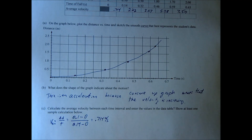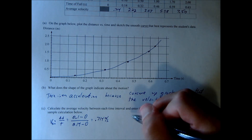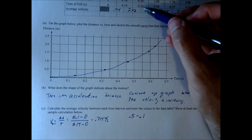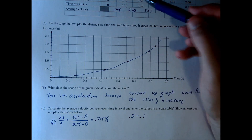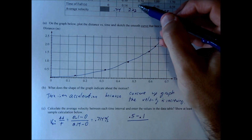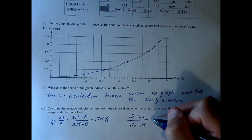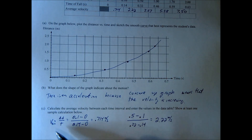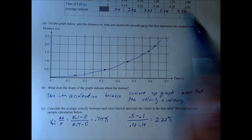Let me do one more example. For the next interval from 0.14 to 0.32 seconds, displacement is 0.5 minus 0.1. A common mistake is to just divide 0.5 by 0.32 — that gives the average from 0 to 0.5, not the interval average. So we subtract 0.5 minus 0.1, then divide by 0.32 minus 0.14 seconds, giving 2.22. As you can see, the velocity is increasing as we go on. Check your answers and make sure you got the same.